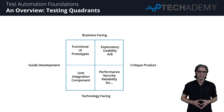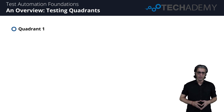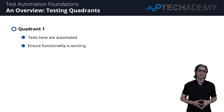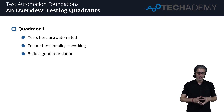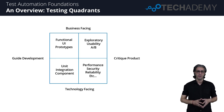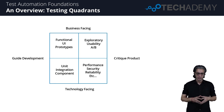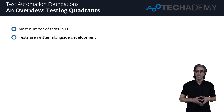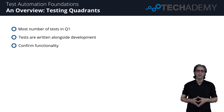Let's discuss what each quadrant means, starting with Quadrant One in the lower left. This quadrant describes technology-facing tests that guide development. These tests are always automated and ensure the functionality is working as expected. Instances include unit, integration, and component tests, all of which confirm the code is working as anticipated. This is an important quadrant and the most tests should be written here. Tests in Quadrant One are written alongside development.